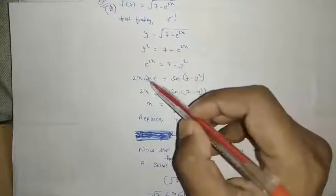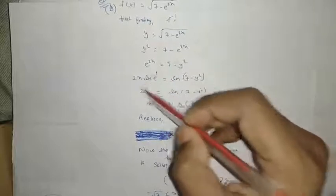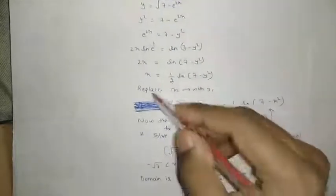Now, ln e equals 1, and how we get the x value? By dividing by 2 we get this value.